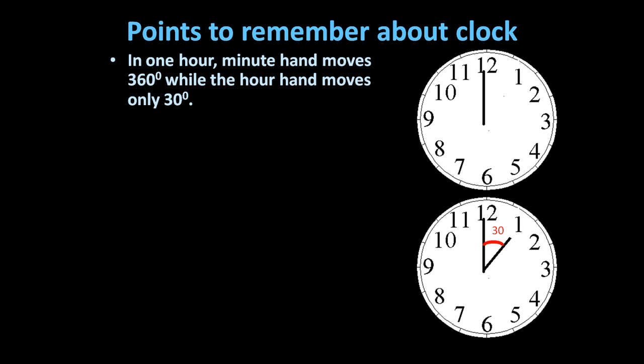Another point: movement of minute hand in each minute. In one hour, it moves from this point to this point, making an angle of 360 degrees. So the minute hand makes a 360-degree angle in one hour or 60 minutes. So in every minute, it will move 360 upon 60, which is 6 degrees.